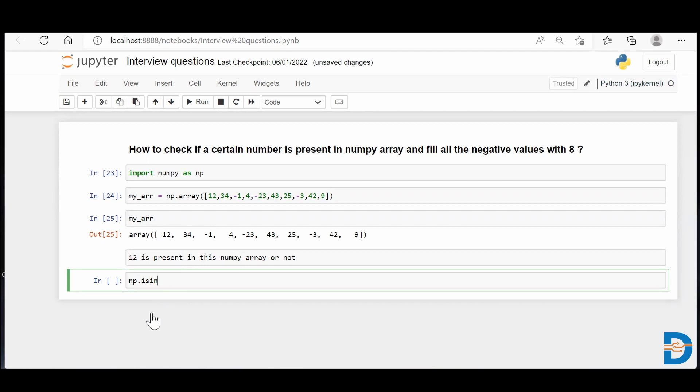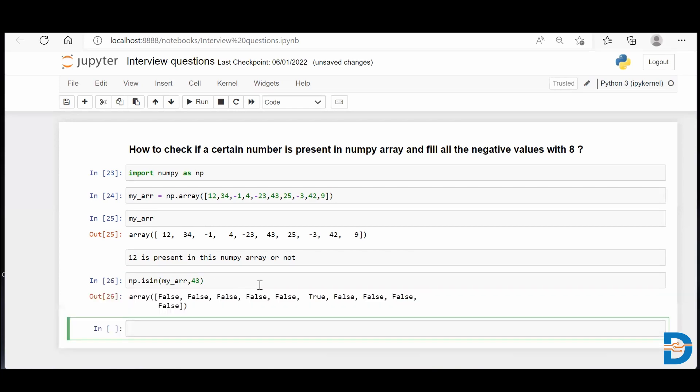So the name itself suggests that it is going to give you the answer whether a certain thing is present or not present. So the functionality goes like this: you're required to put your NumPy array and then comma the number that you want to find out. So let's say I enter the number 43 over here. Now when I run this, you'll see you'll get a Boolean stating that this number is present at this particular location. If it is present, you'll get a true, else you'll get a false.